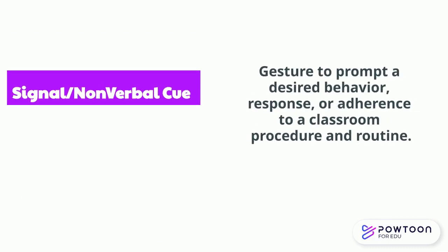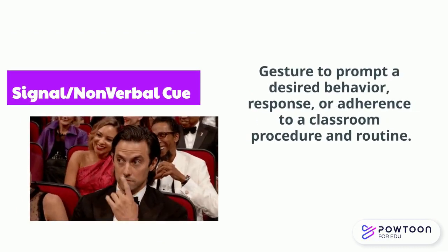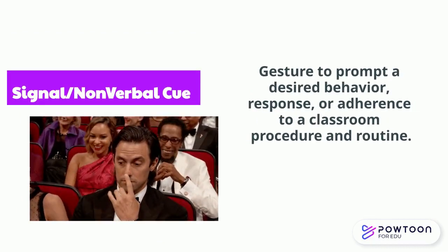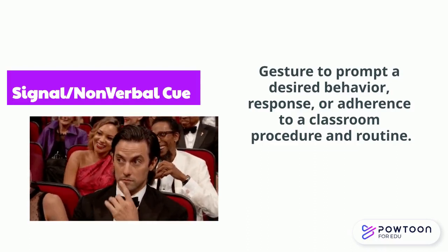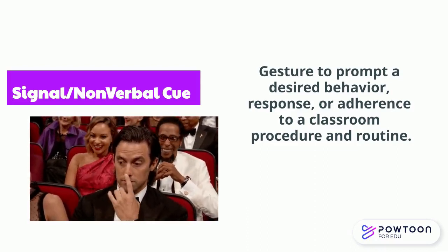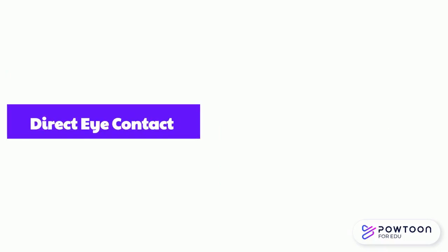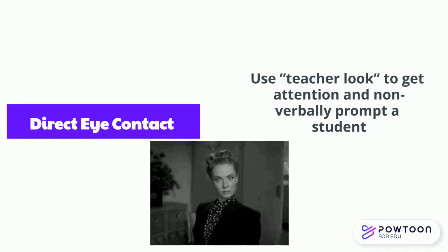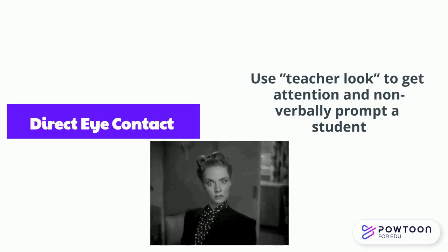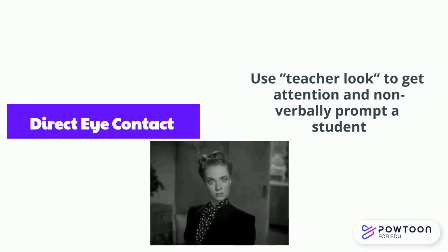A signal or a nonverbal cue is usually pre-arranged, and it prompts a desired behavior, response, or adherence to a classroom procedure or routine. Use your teacher look — direct eye contact — to get the attention and nonverbally prompt a student to get back on track.